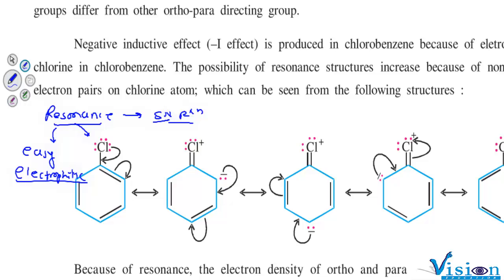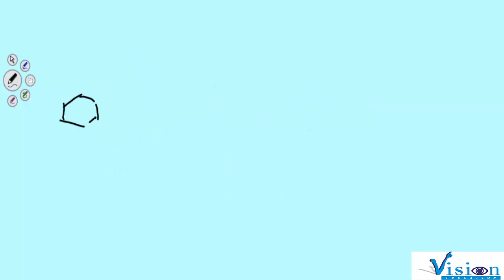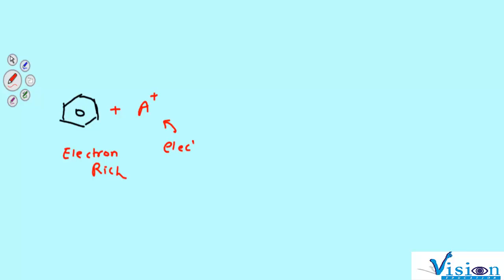First of all, let me explain what is an electrophilic substitution reaction. We had learned in the latter part of 11th standard that benzene is basically an electron-rich species, and because of that, electrophiles — as the name suggests — are electron-deficient species.